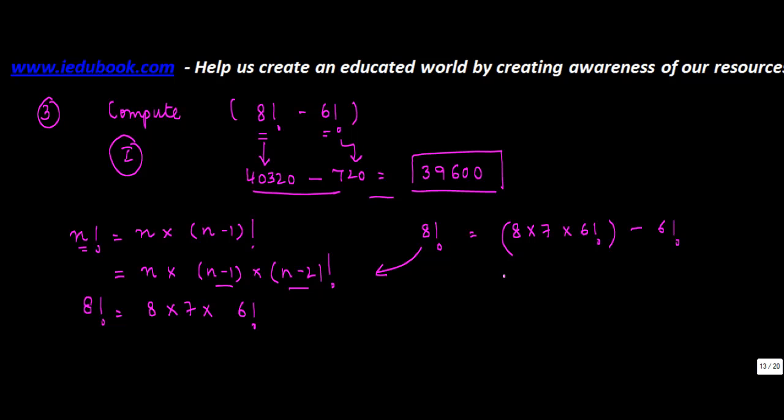So if you take factorial 6 as common, it becomes 8 times 7 minus 1, times factorial 6. Factorial 6, as I told you in the previous video, was 720. 8 times 7 is 56, which equals 39600. So that's how you can do the subtraction of 2 factorials.